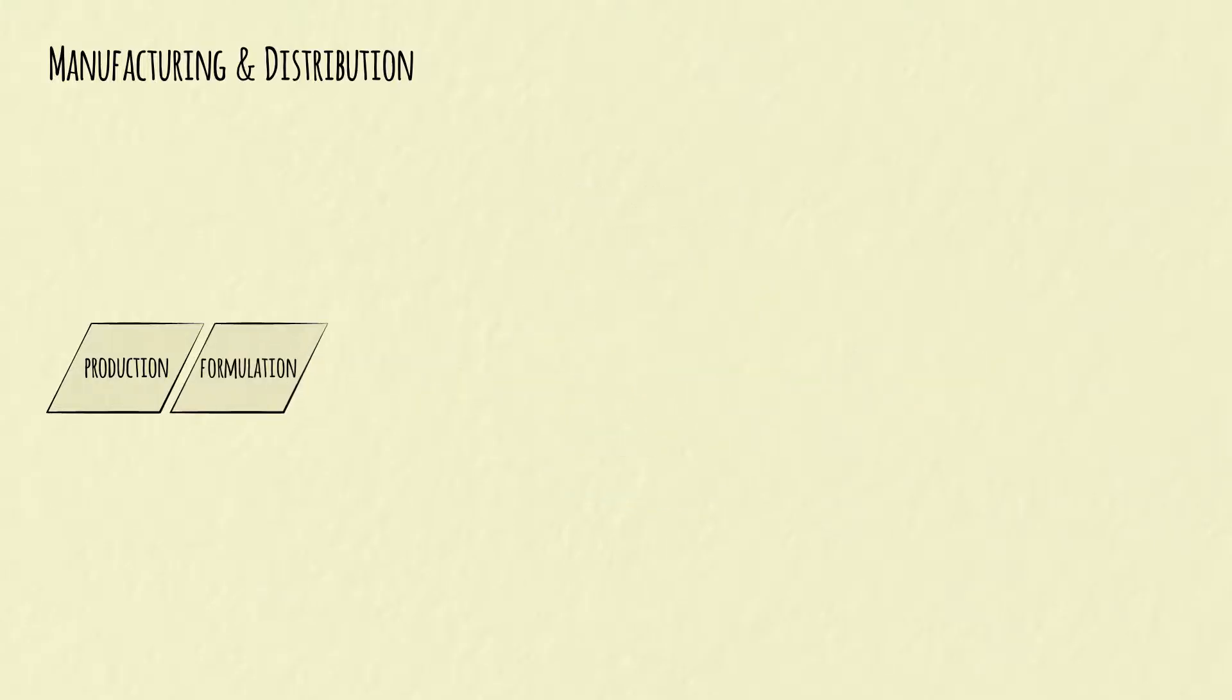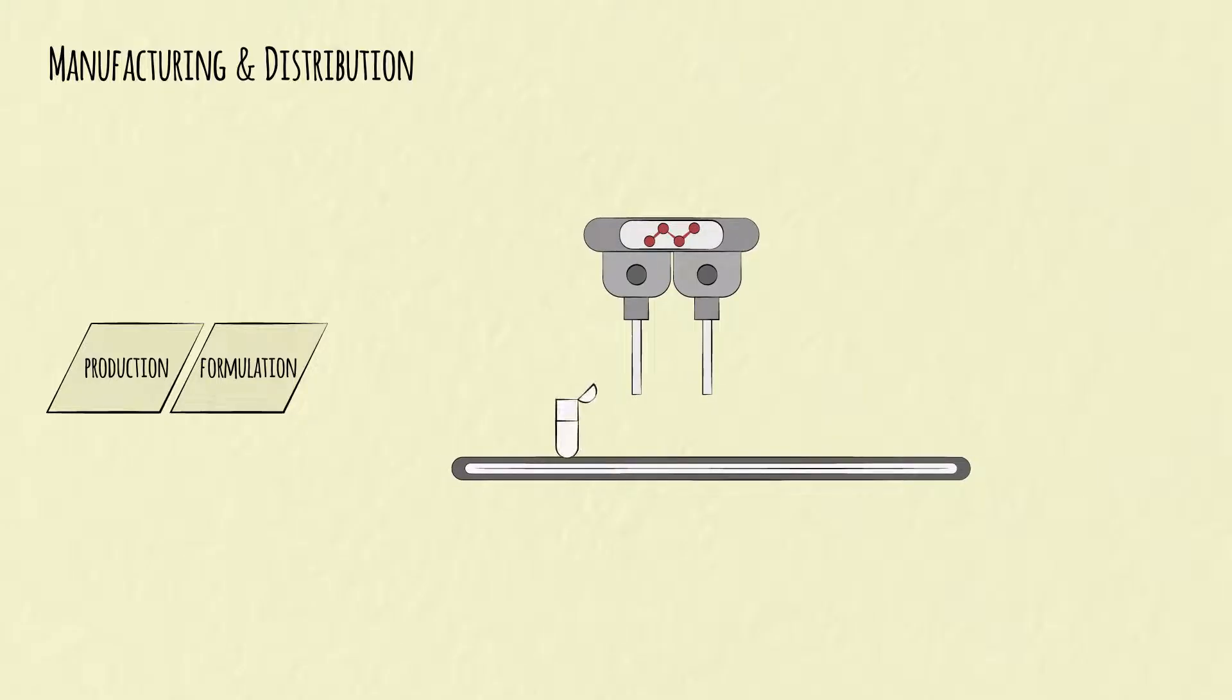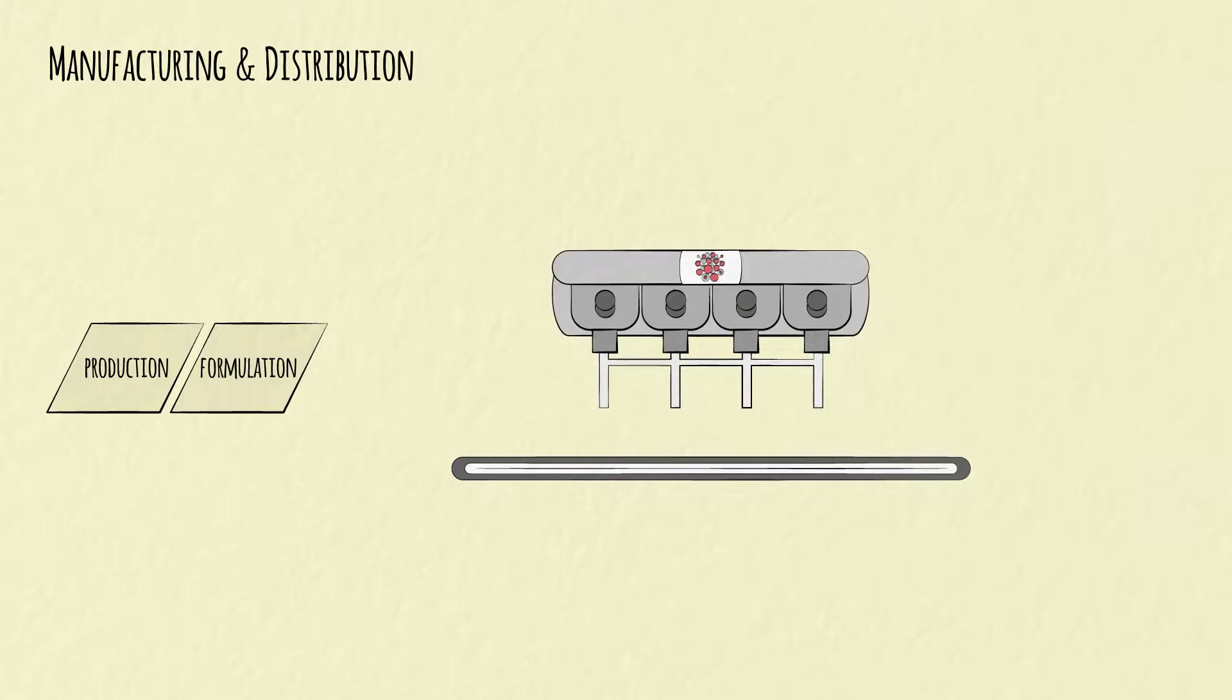Anna's drug will then go through the formulation step, where the active ingredient is combined with inactive ones. The drug is put into its final form and dosage. A pill's ingredients are put into a capsule. A biologics components are filtered and combined, and vaccines are filled into vials or syringes.